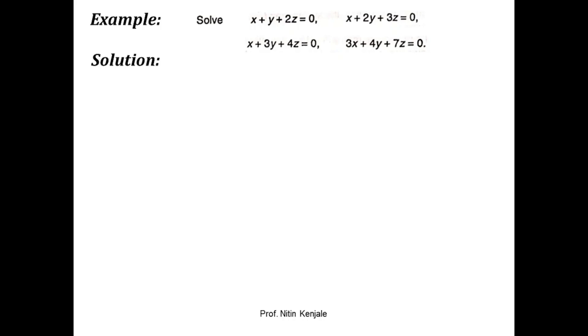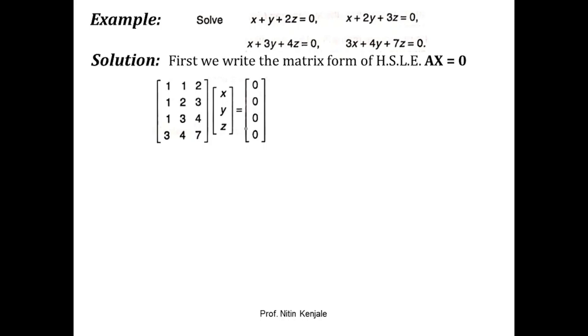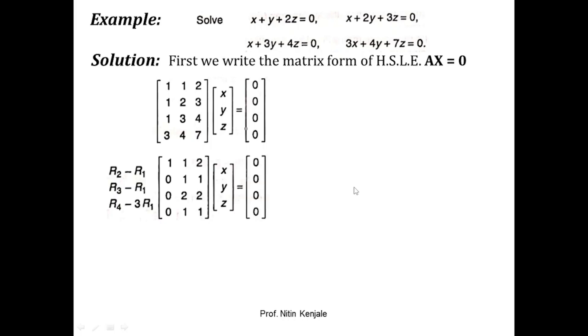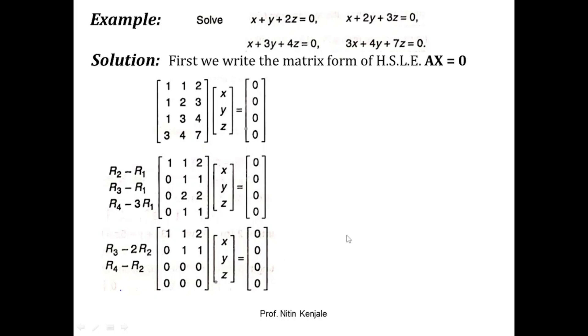Now let us look at the next example. We are given four equations in three variables x, y, and z. First, we put it into matrix form Ax = 0. Then we reduce matrix A to row echelon form using only row transformations. You can pause the video to check these calculations. After a few transformations, we end up with a matrix in row echelon form that cannot be further reduced, so we stop.